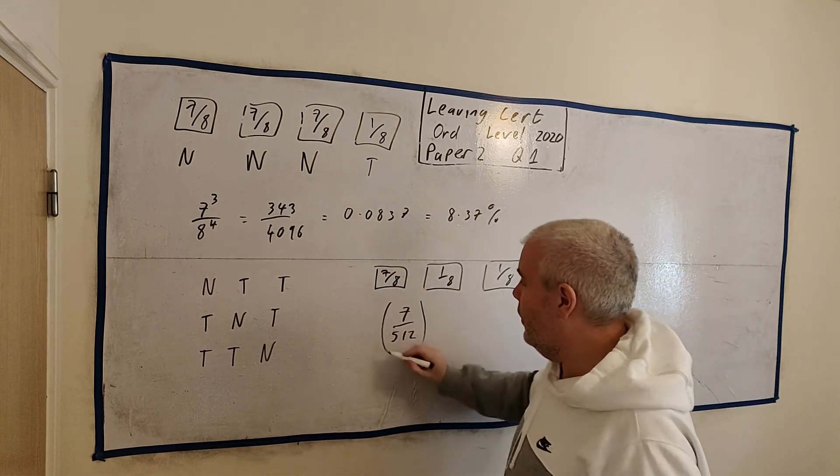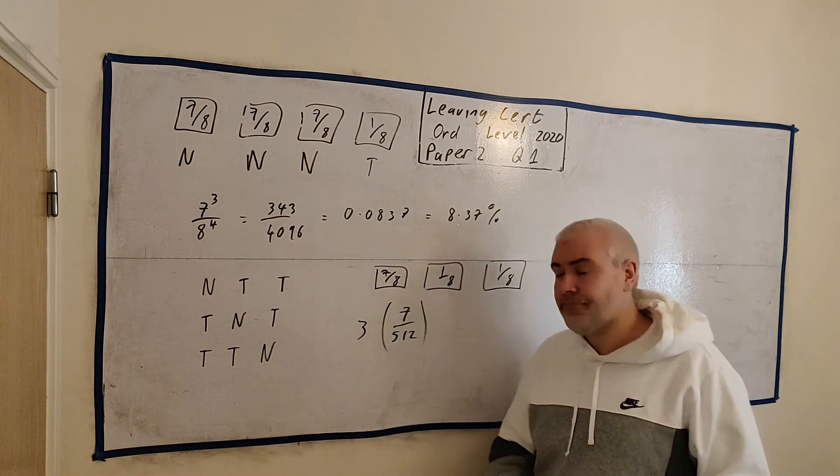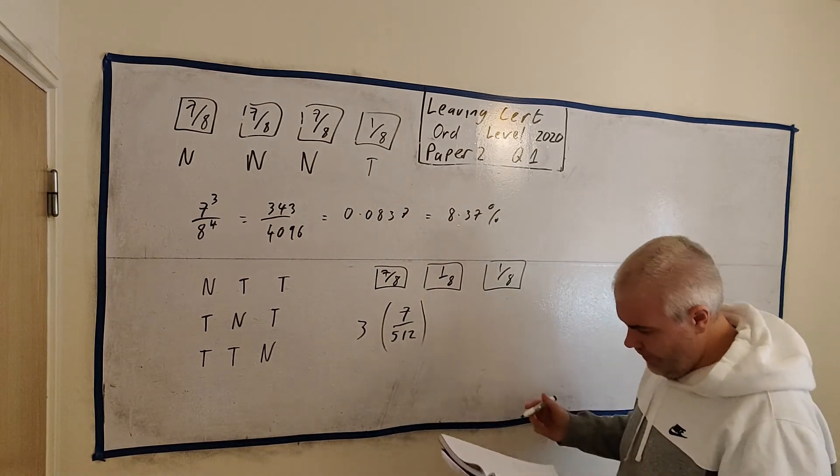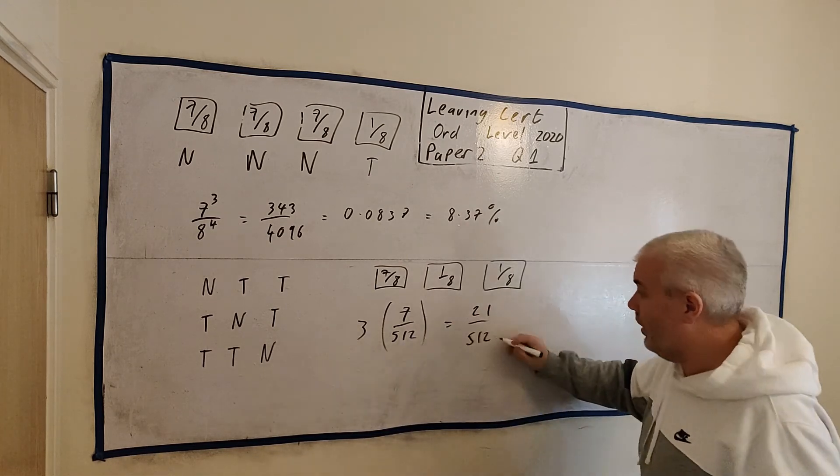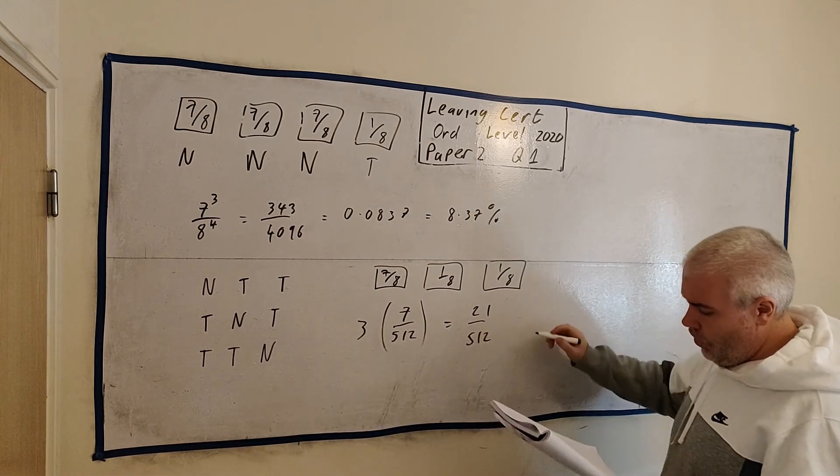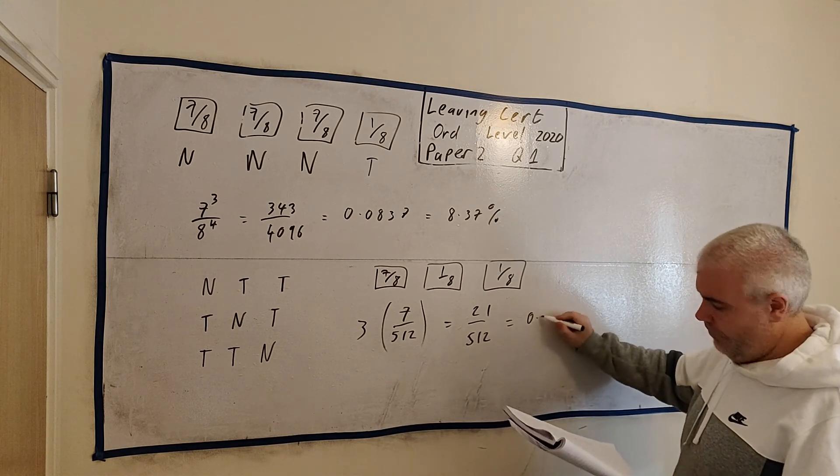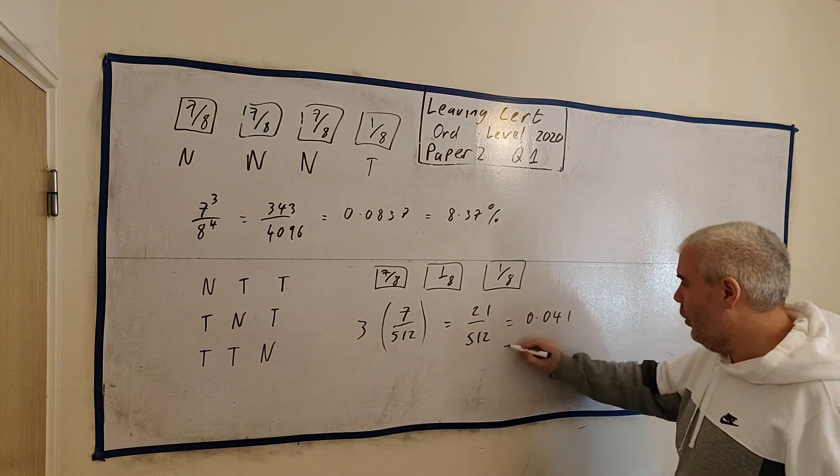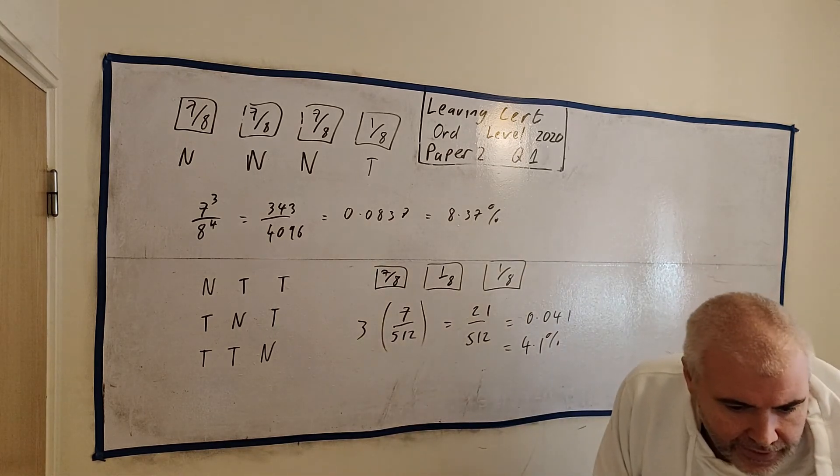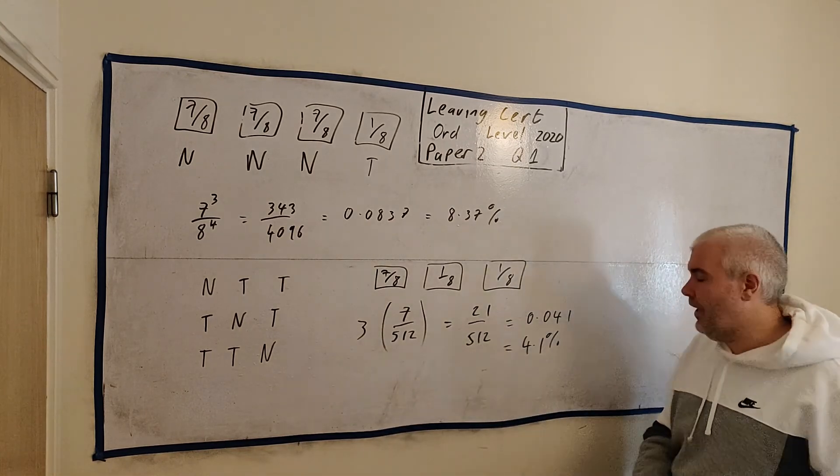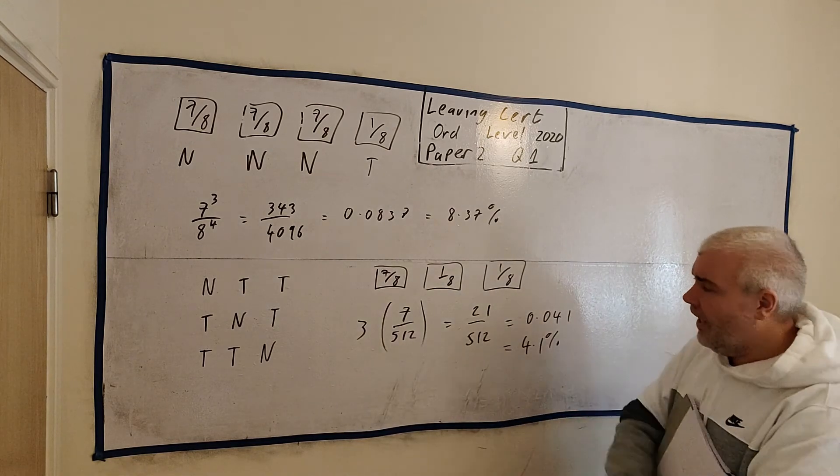Our total answer, we need to multiply this by 3. And that's it. This would be equal to 21 divided by 512. That's fine as the answer. Or you could write that as 0.041, or you could write that as 4.1%. They don't ask any which type. And that's it.